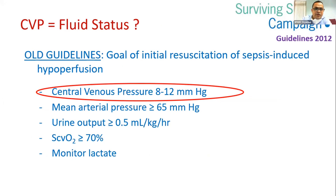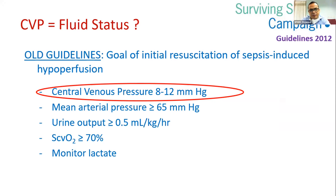Regarding assessment of fluid status: central venous pressure has been used for years. In older guidelines by the Surviving Sepsis Campaign, one component was to maintain CVP between 8 to 12 mmHg — along with MAP greater than 65, urine output, central venous oxygen saturation, and lactate. But measuring CVP and targeting 8–12 mmHg has been removed from recent guidelines.